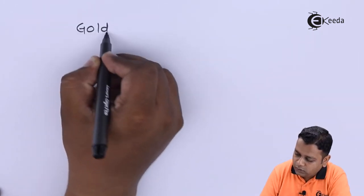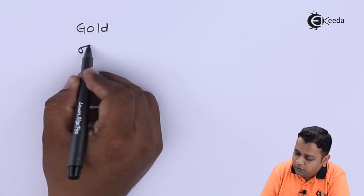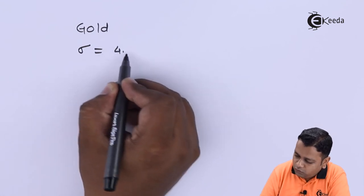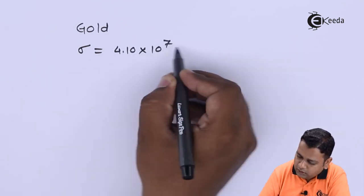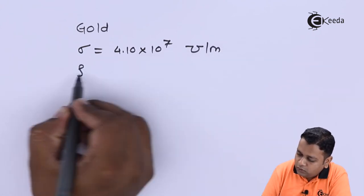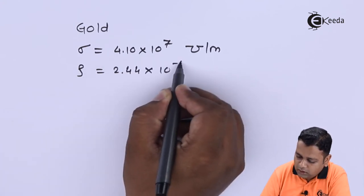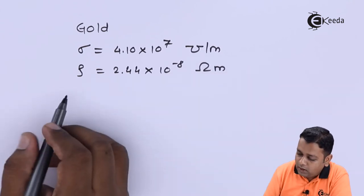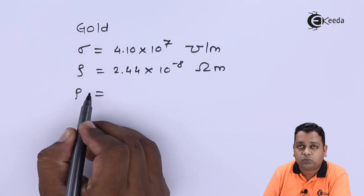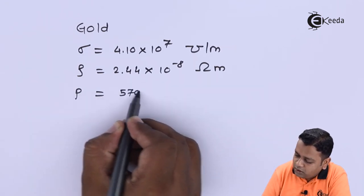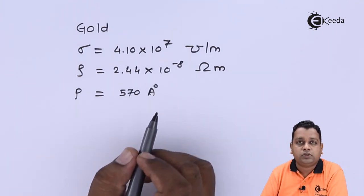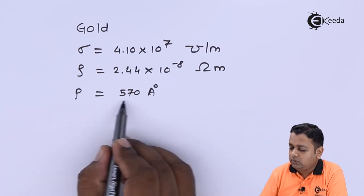The metallic film coated onto plastic or glass substrate is most often gold, silver, or copper. For gold: the bulk conductivity sigma = 4.10 × 10^7 mhos/meter, the bulk resistivity = 2.444 × 10^−8 ohm·meter, and the electron mean free path p = 570 angstroms (where 1 angstrom = 10^−10 m).